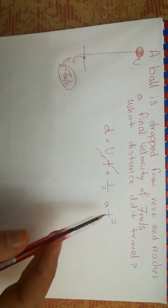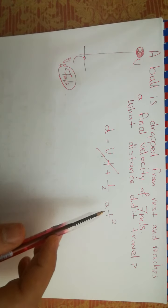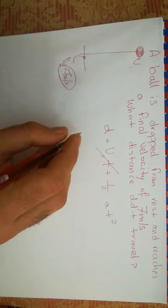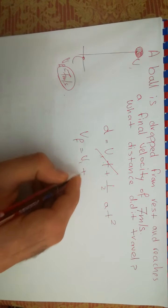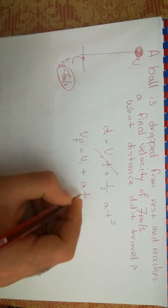We don't know the time that this object has taken. And so in order to find the time, we remember that we have another rule that says v_f equals v_i plus a*t.